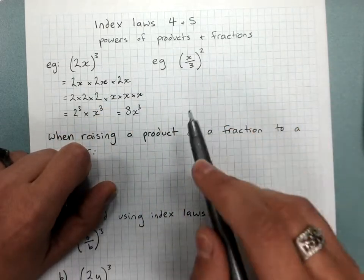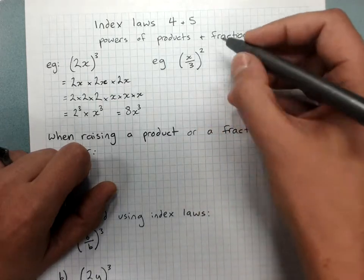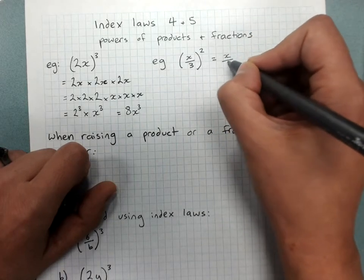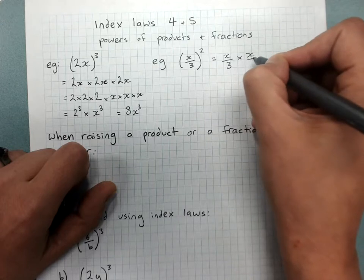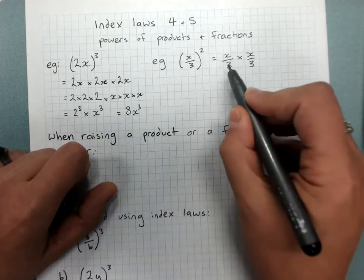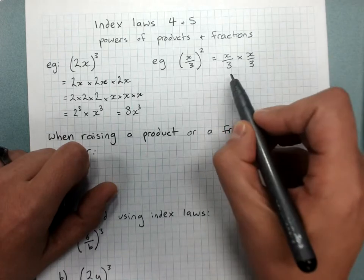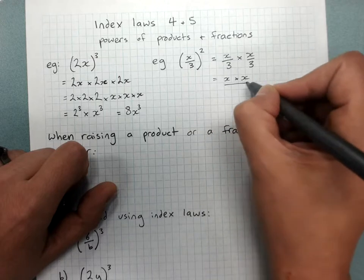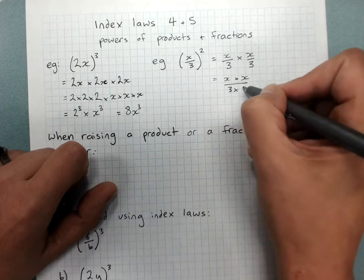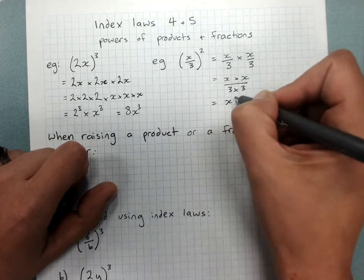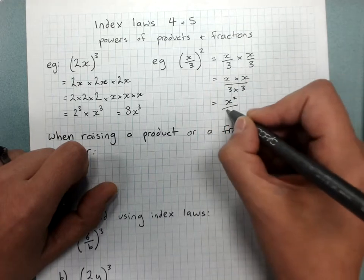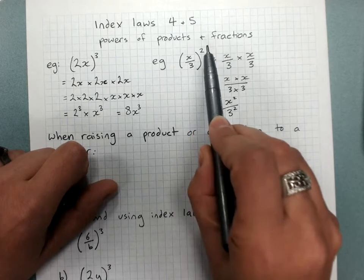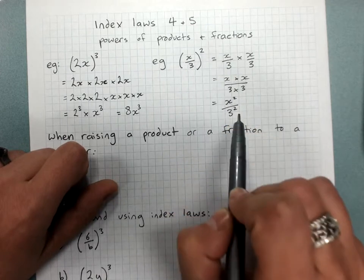We can do the same with a fraction — expand it to find out the shortcut. x over 3 squared means x over 3 times x over 3. When multiplying fractions, we multiply the numerators together and the denominators together: x times x is x squared on top, and 3 times 3 is 3 squared on the bottom. So a fraction raised to a power means the top raised to that power and the bottom raised to that power.